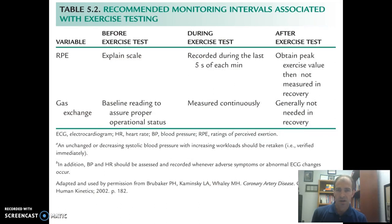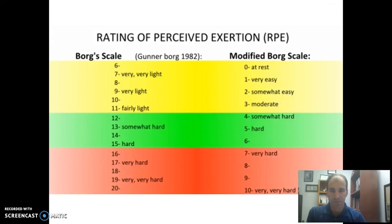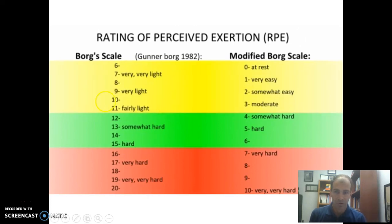The same thing applies to RPE and gas exchange — if we are measuring these, we want to make sure we're doing them fairly regularly during the test, particularly at the end of each stage, and also after the test. With gas exchange, that's something we want to look at on a continuous basis. The RPE Borg scale is something we've talked about a lot. In our lab we use the regular Borg scale; there's also a modified Borg scale used in other places — both just give us an understanding of how hard the subject feels like they're working at any given point.